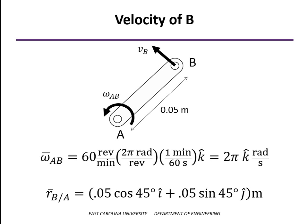The position vector of point B relative to A: to get from A to B, we would go in the x direction 0.05 times the cosine of 45 degrees, and in the y direction 0.05 times the sine of 45 degrees.